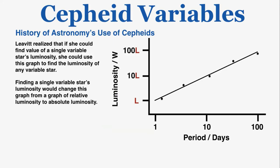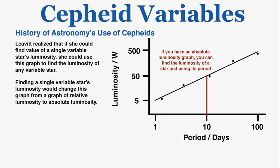She then argued that finding a single variable star's true luminosity would transform this graph from relative to absolute luminosity. For example, if we found that a variable star with a period of one day had a luminosity of 5 watts, that would reveal the unknown constant. Without making any more observations, we could apply that constant to all other values: since we know a tenfold increase in period means a tenfold increase in luminosity, a star with a ten-day period would definitely have a luminosity of 50 watts.